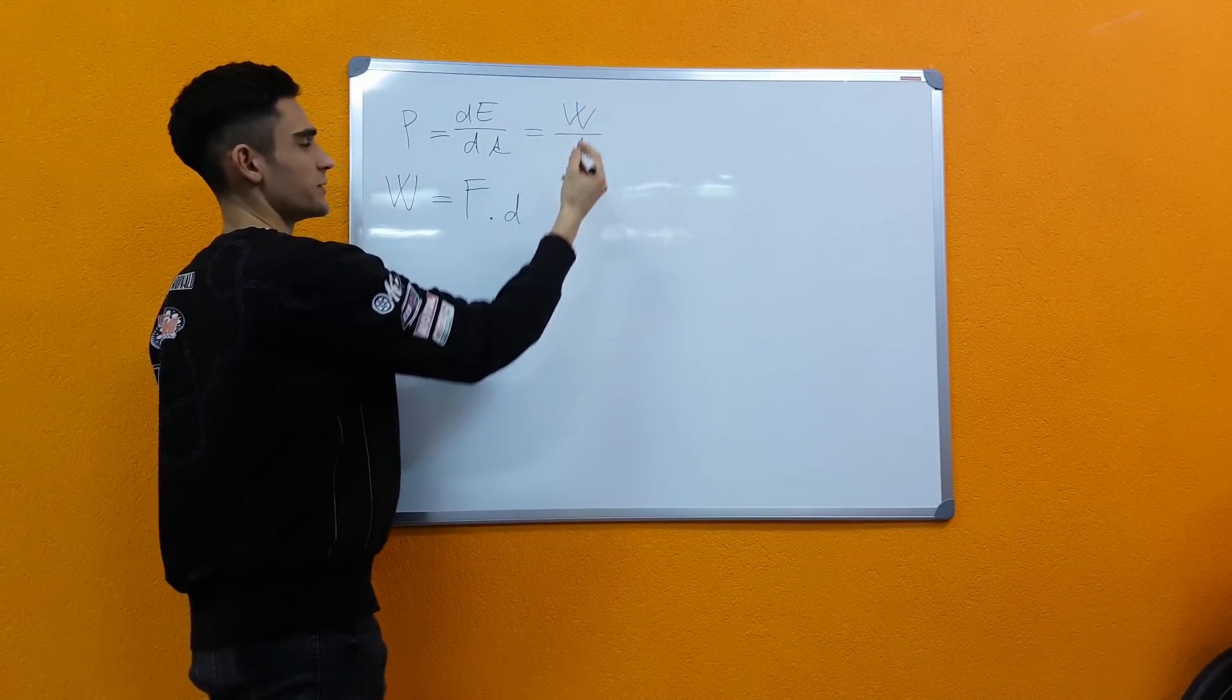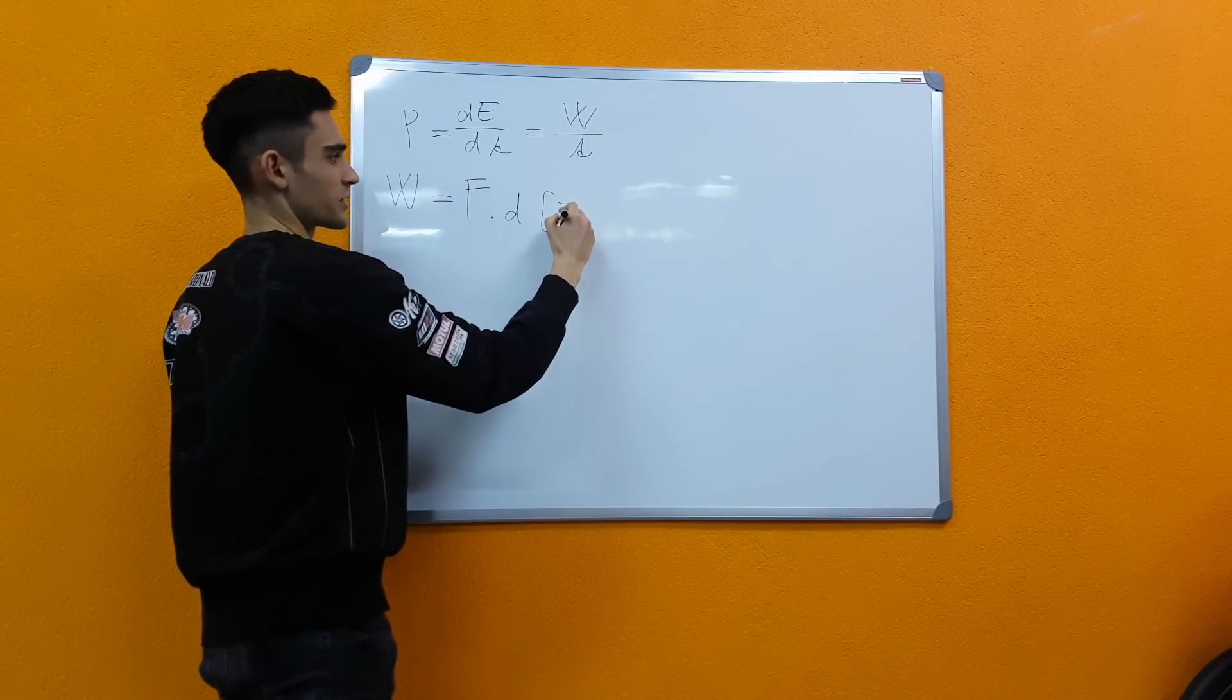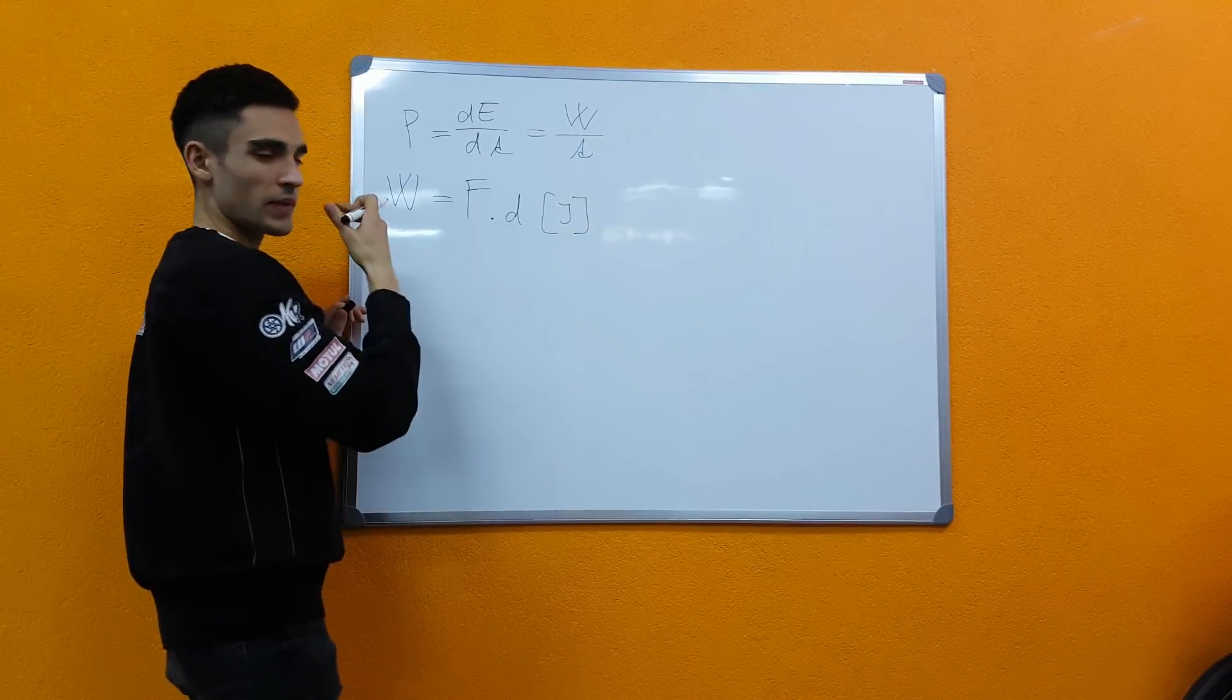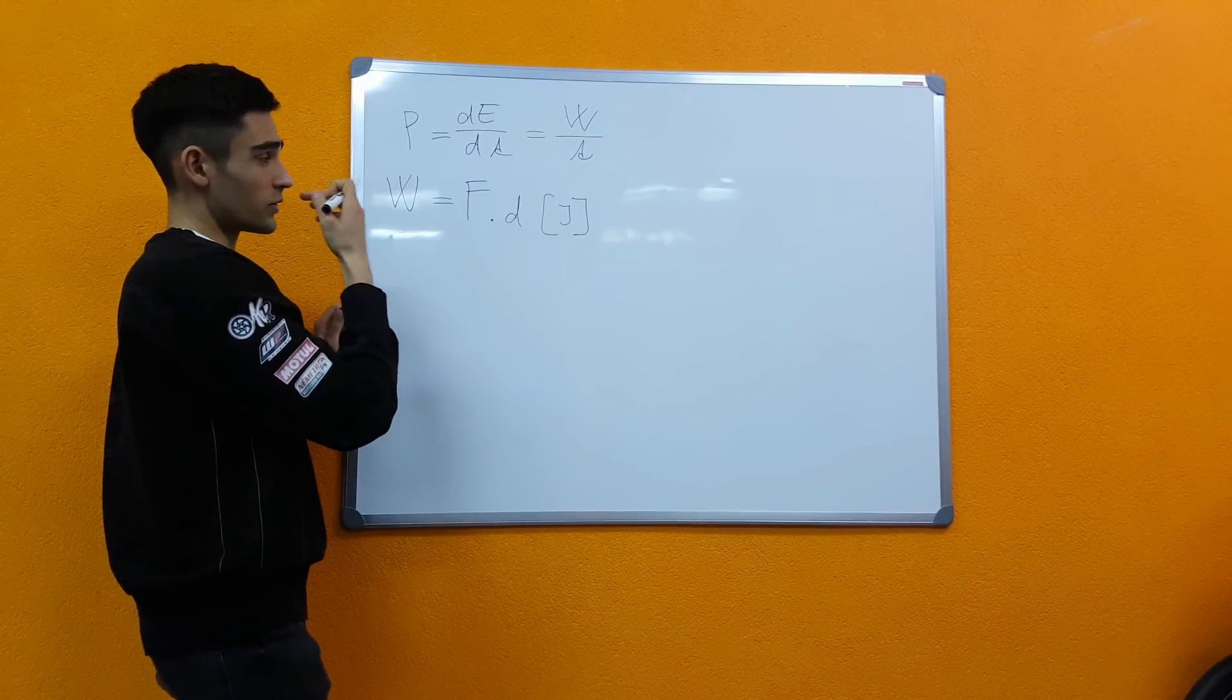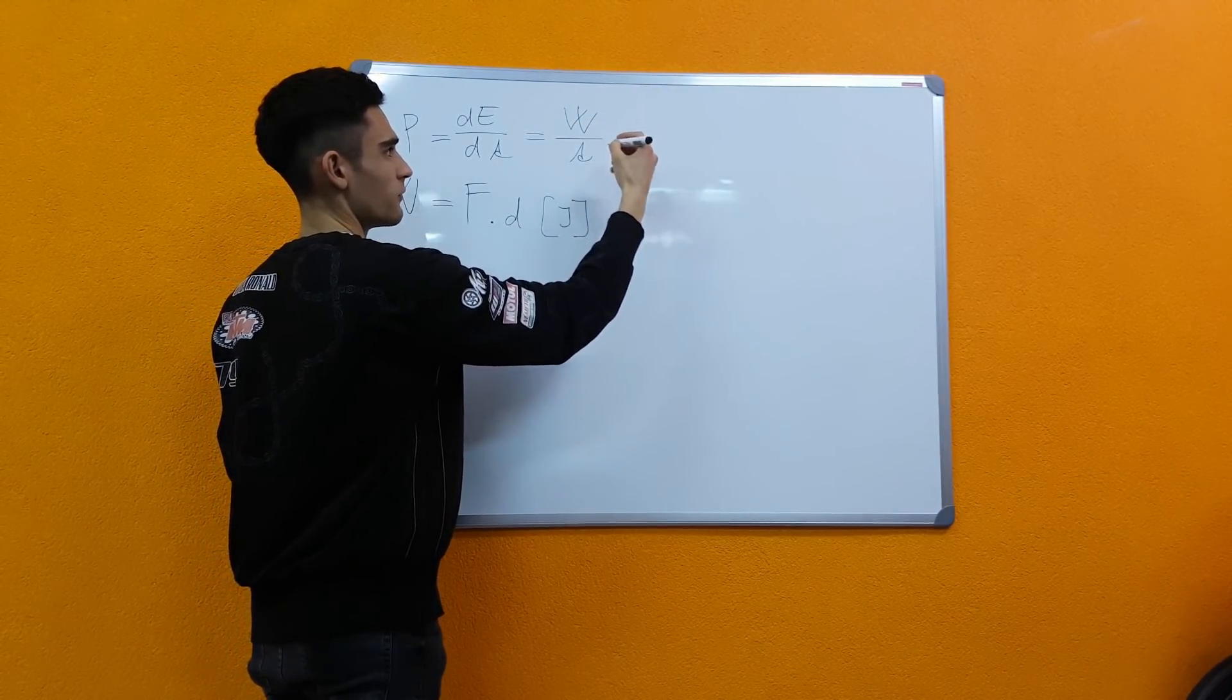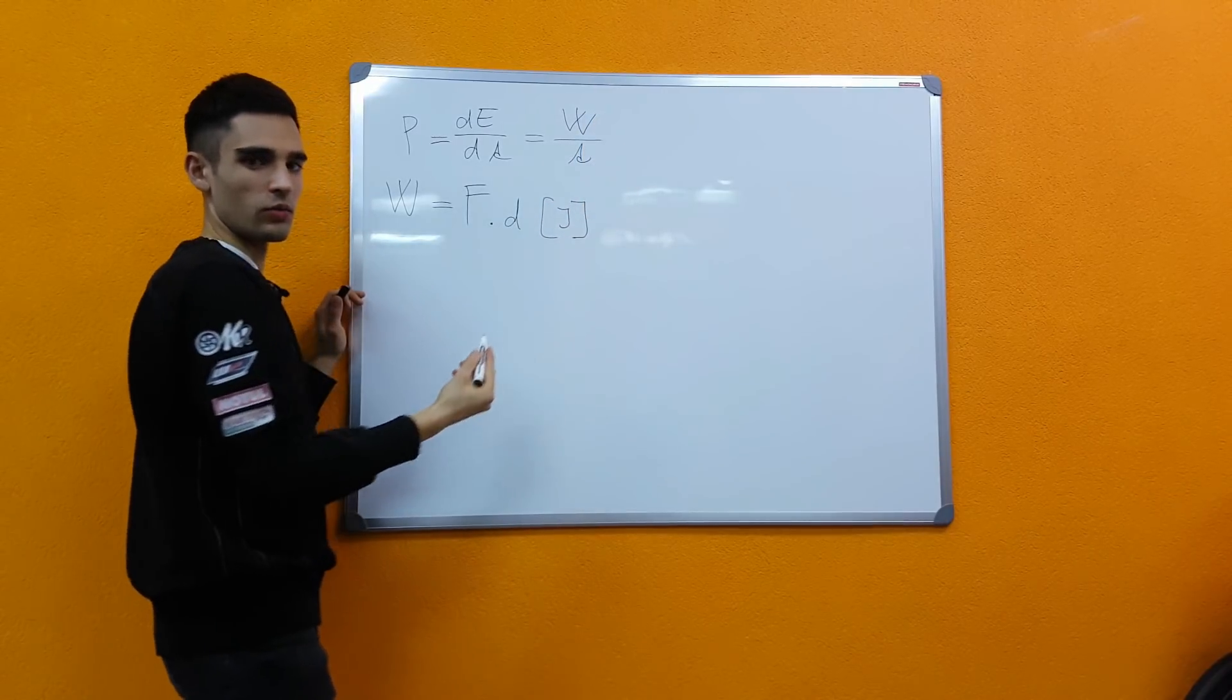This is the unit of power actually, because work is measured in joules and time of course is measured in seconds. So what we have here is one joule per second, that is one watt.